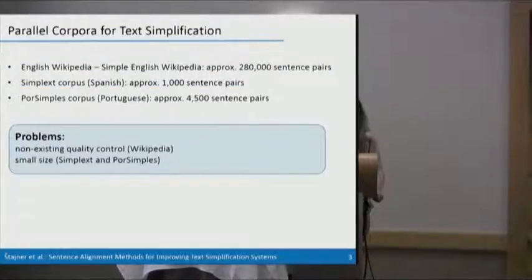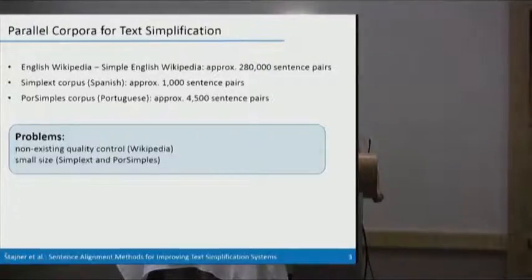So what is the problem nowadays with text simplification? Well, there is not enough parallel datasets for training data-driven text simplification systems. The largest text simplification dataset is for English. Those are 280,000 sentence pairs automatically aligned from English Wikipedia and Simple English Wikipedia. And for Spanish and Portuguese, we have much less training data. So not only that we don't have many text simplification datasets, but each of them have additional problems. In the case of Simple English Wikipedia, we don't have any quality control. There are guidelines how to write Simple English Wikipedia, but we are not sure that they are respected when the writers make Simple English Wikipedia articles. And in case of Spanish and Portuguese, this amount of data is not enough to train any automatic text simplification system.